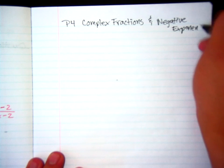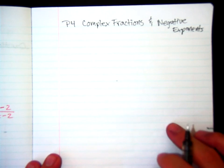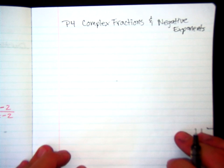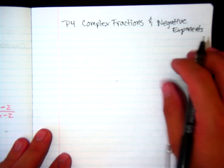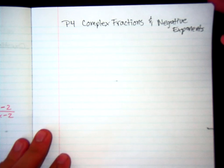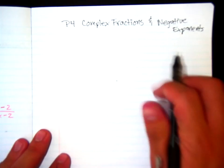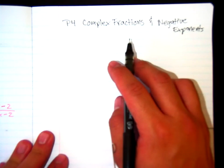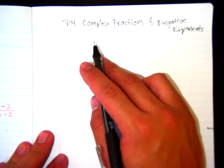So what we mean by complex fractions and negative exponents is that for a complex fraction, we're actually going to have fractions in both the numerator and the denominator. For negative exponents, it's kind of self-explanatory, we're going to be dealing with negative exponents, but in the context of rational expressions. So there's going to be some factoring out involved, which makes things a little more complicated.